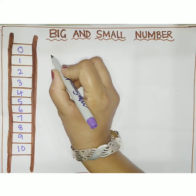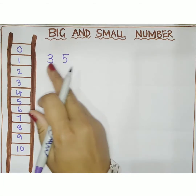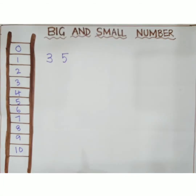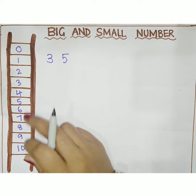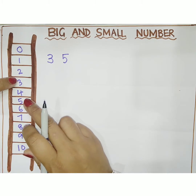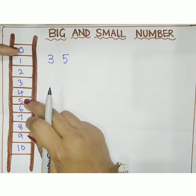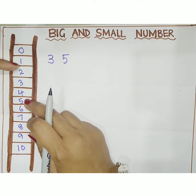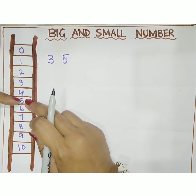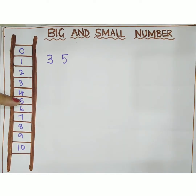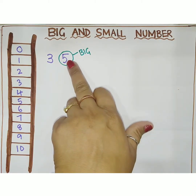Let me take the first example: 3 and 5. We have to point to these two numbers on the number line. So 3 is here and 5 is here. Now we have to see that from 0, which number comes first. We can see 3 comes first and 5 comes later. It means 5 is the big number.